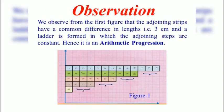Observation: We observe from the first figure that the adjoining strips have a common difference in length, i.e. 3 cm, and a ladder is formed in which the adjoining steps are constant. Hence it is an arithmetic progression.